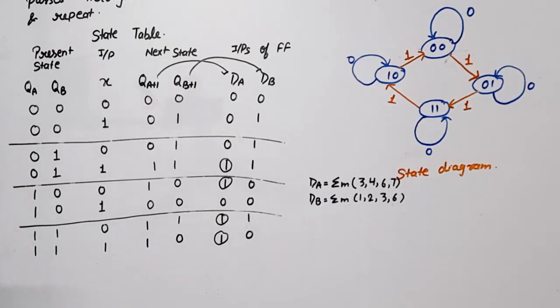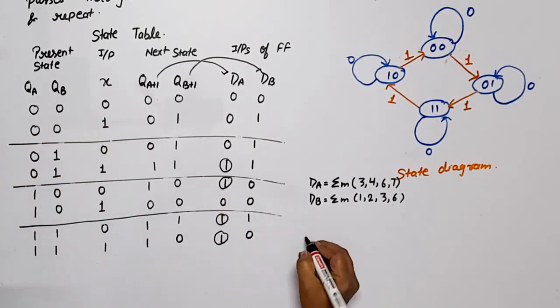Now we will draw the K-map for these equations. This is a three-variable K-map with variables QA, QB, and X.